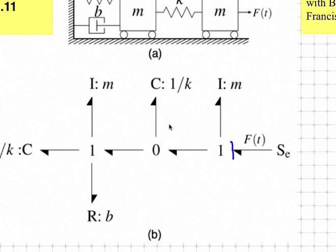We continue to the remaining elements, starting with the energy storing elements: the I's and the C's. If I take the I element also attached to this one junction and place it in integral causality, it will specify the flow into the one junction. So if we have flow going into the one, the remaining bond must specify an effort, and causality propagates to this intermediate bond.